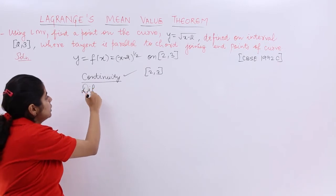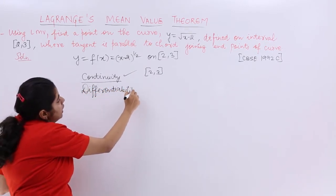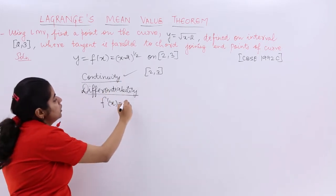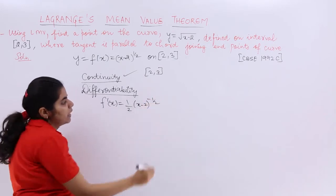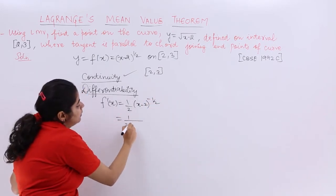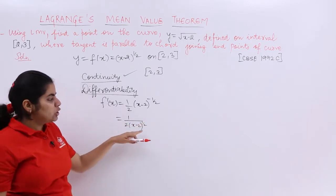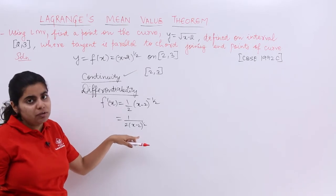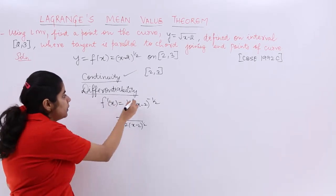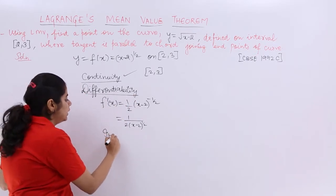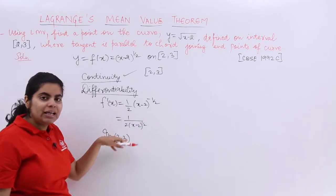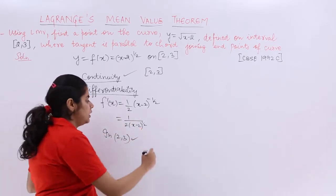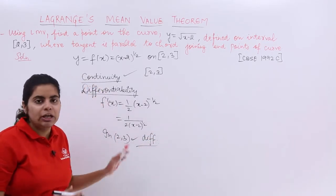Next, talk about differentiability. For differentiability, let's differentiate f(x). So f'(x) = (1/2)(x − 2)^(−1/2), which means the denominator has √(x − 2). Had we put x = 2, it would be undefined — but differentiability talks about the open interval (2, 3). In the open interval (2, 3), every value gives a finite value in f'(x), so the function is differentiable on (2, 3).